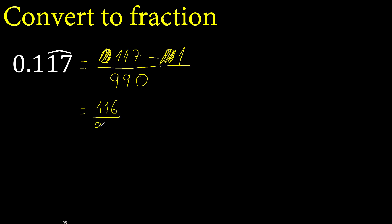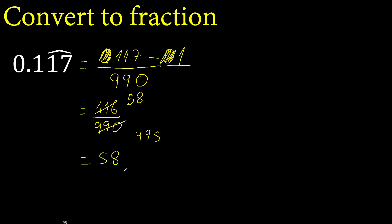Subtract. Can be simplified because it can be divided by the same number. Divided by two is 58. Finish — cannot be simplified.